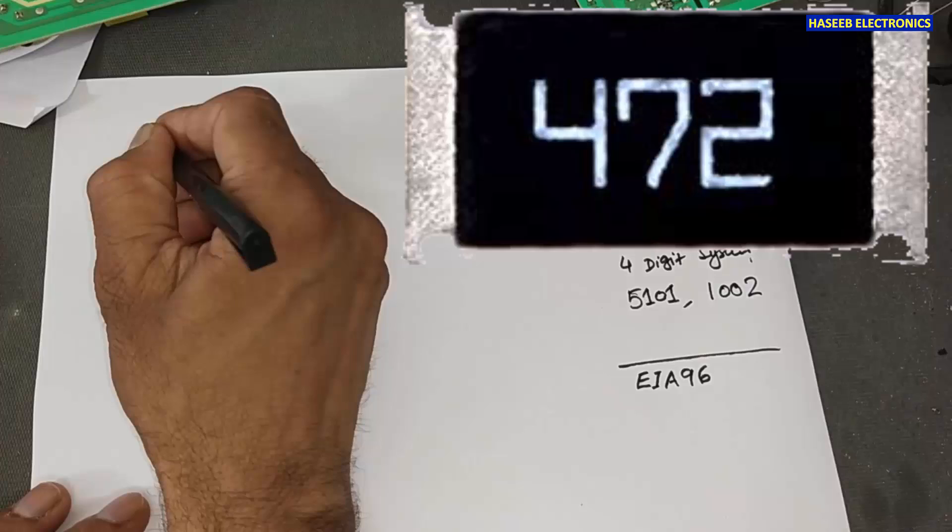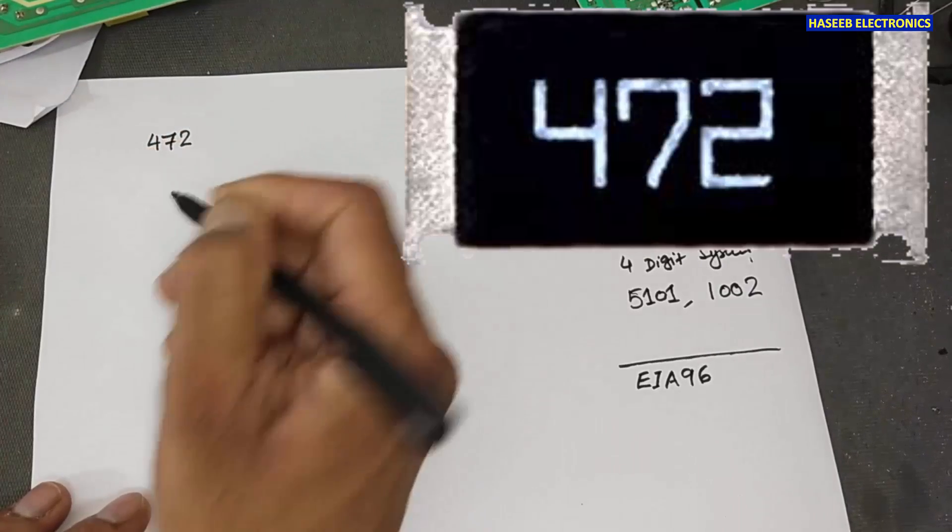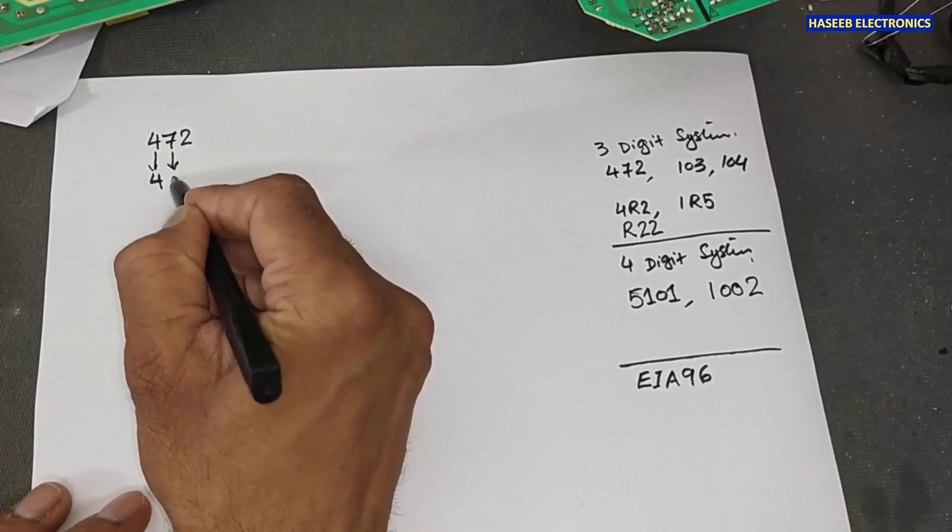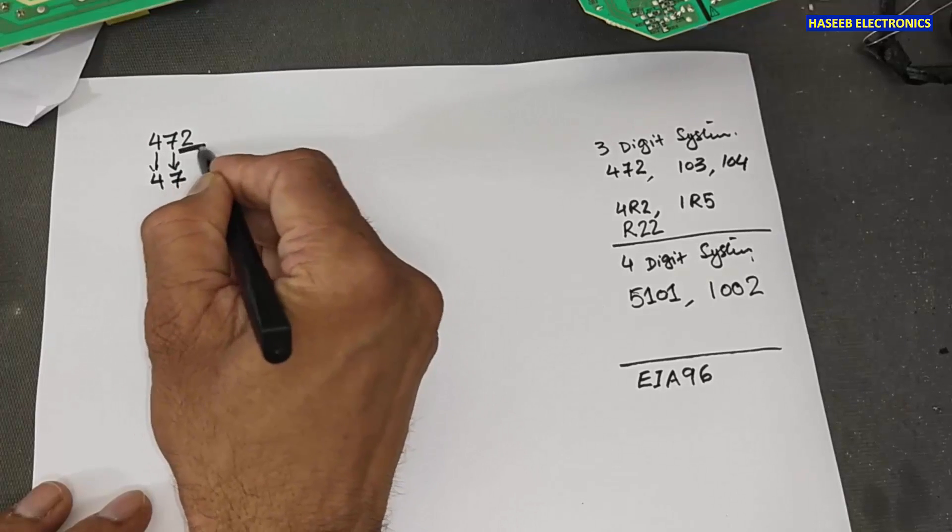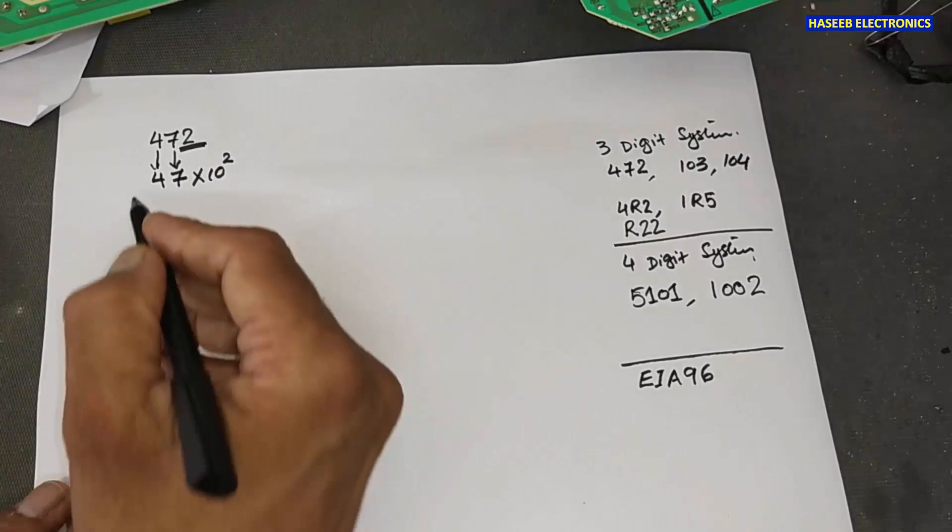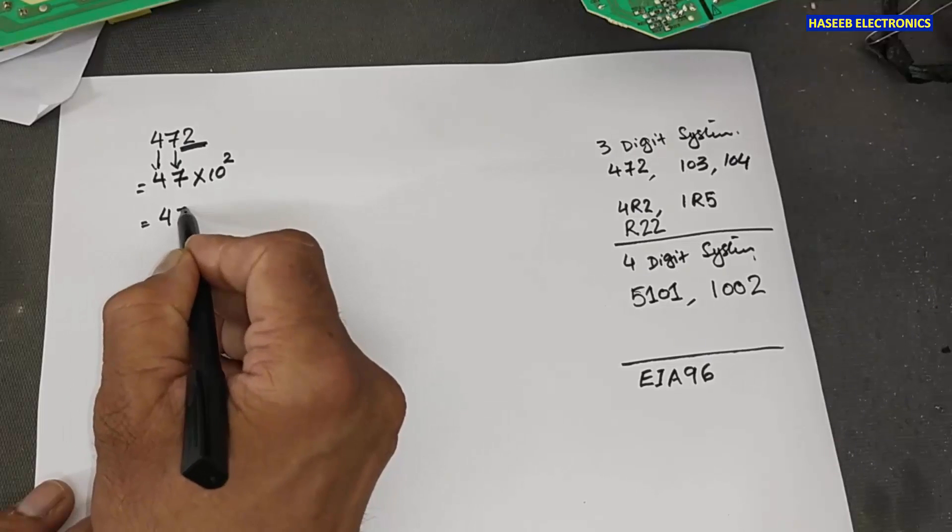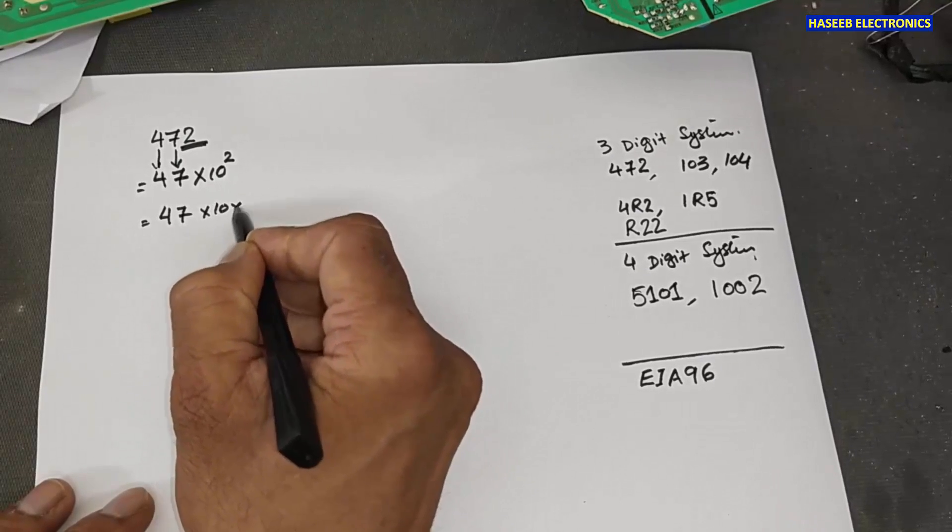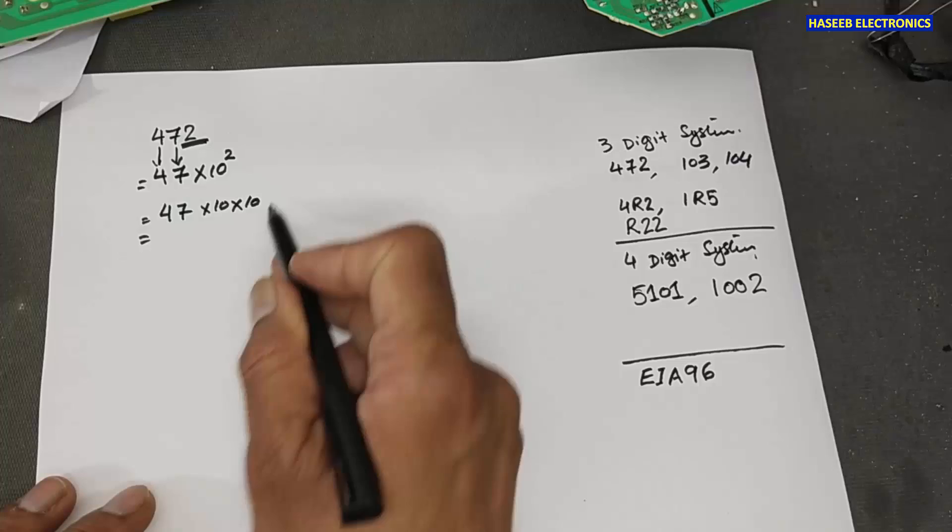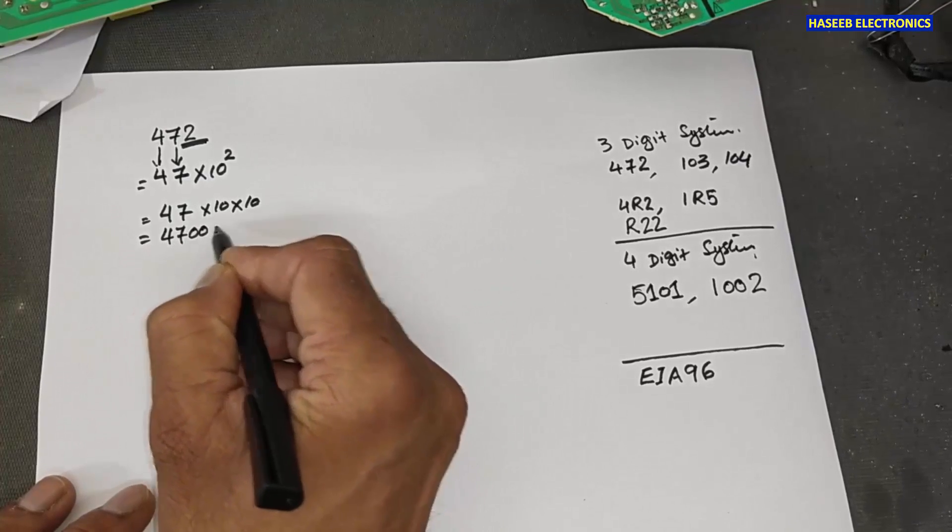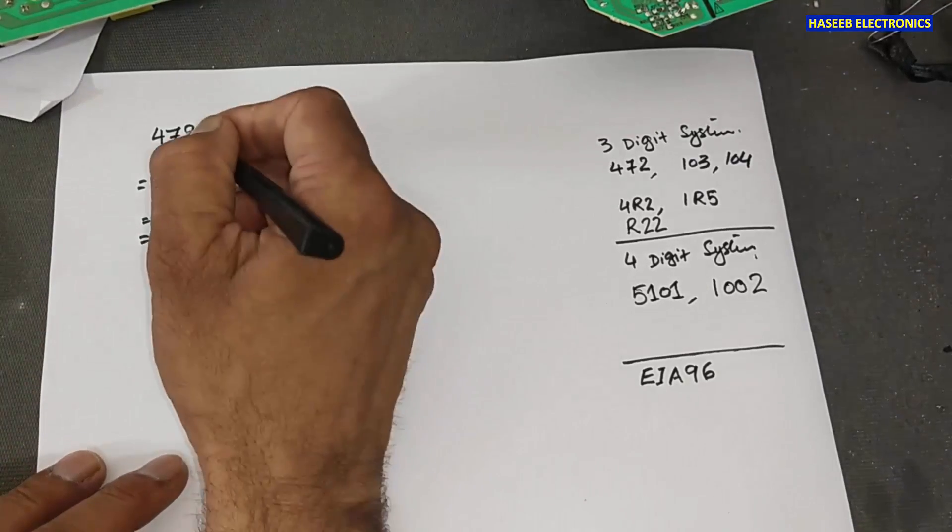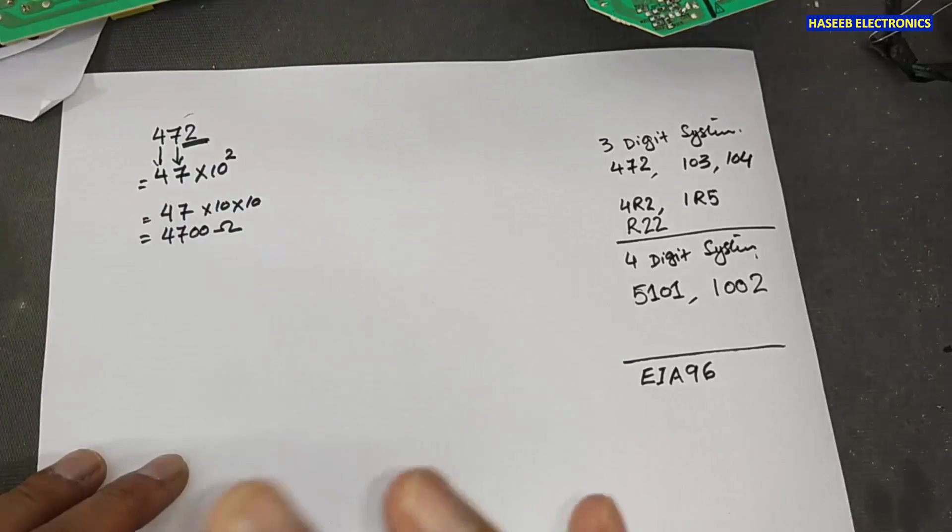In three-digit marking, if we have number 472, 4 is the same value, 7 and 2 is multiplier 10 raised to power 2. That means 4, 7, 10 multiplied by 10. It will multiply by two tens. Or we can simply add two zeros. 4, 7, 0, 0. 4700 ohms. 10 raised to power. Or we can write directly 4, 7 and the number of zeros.